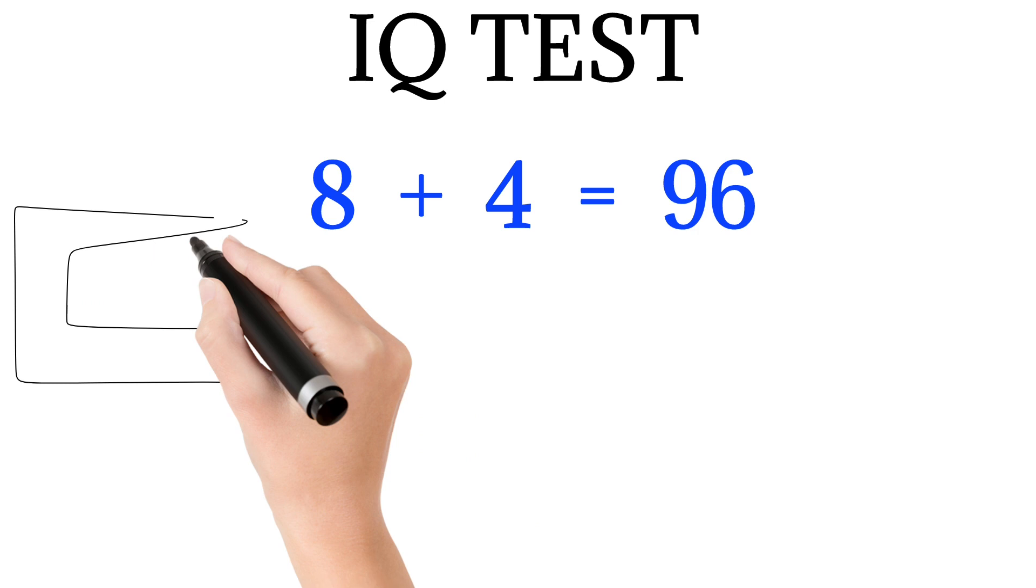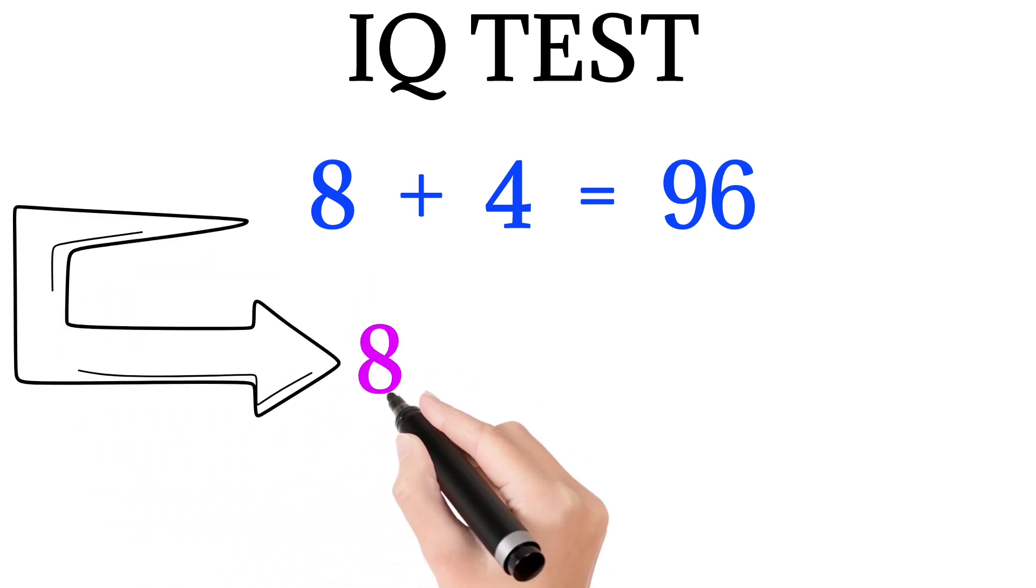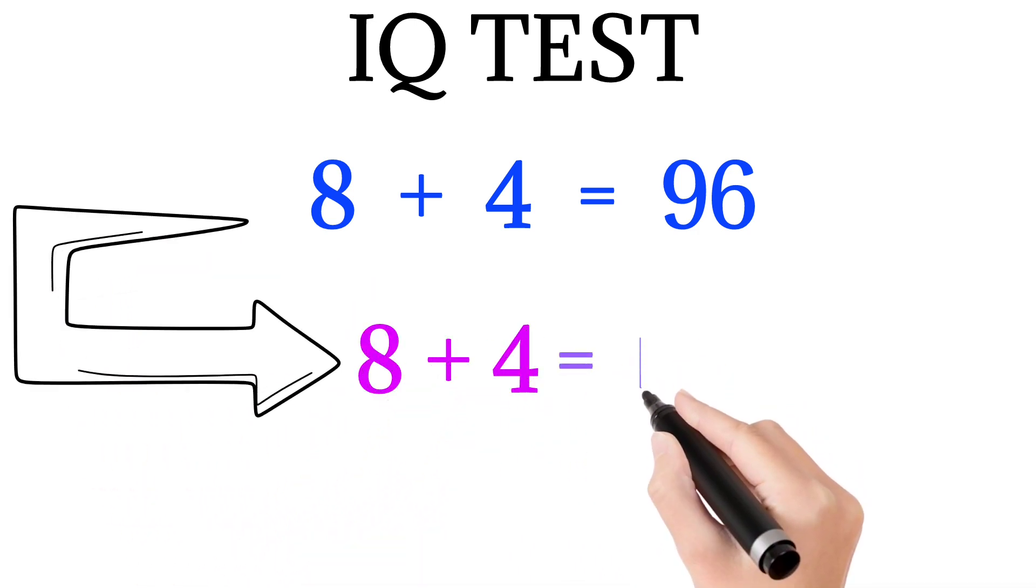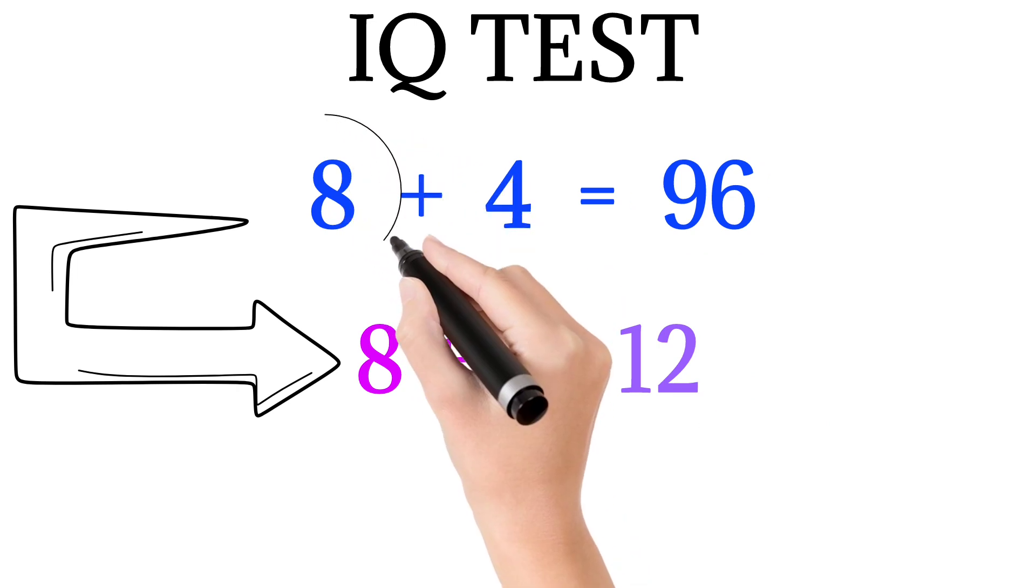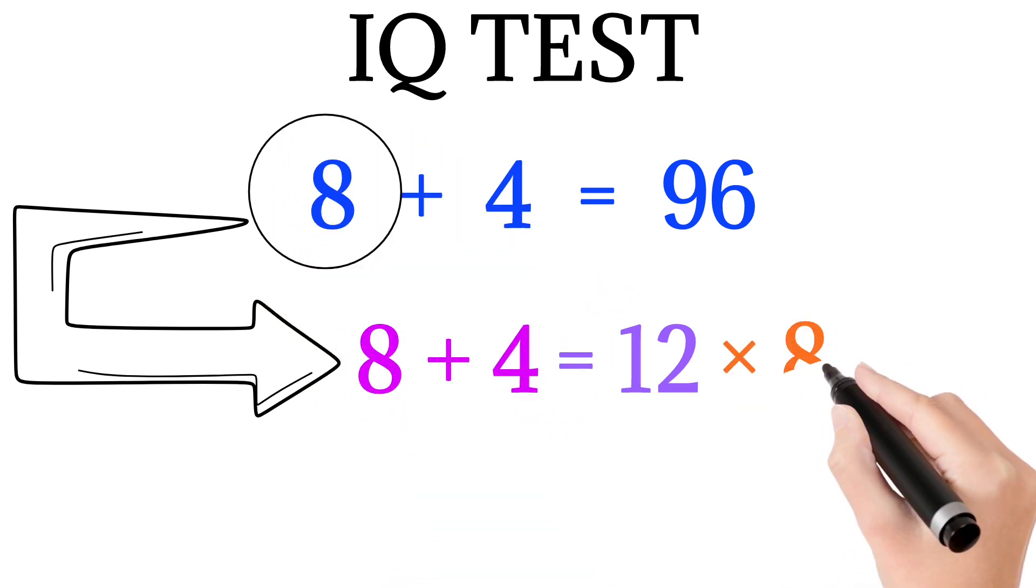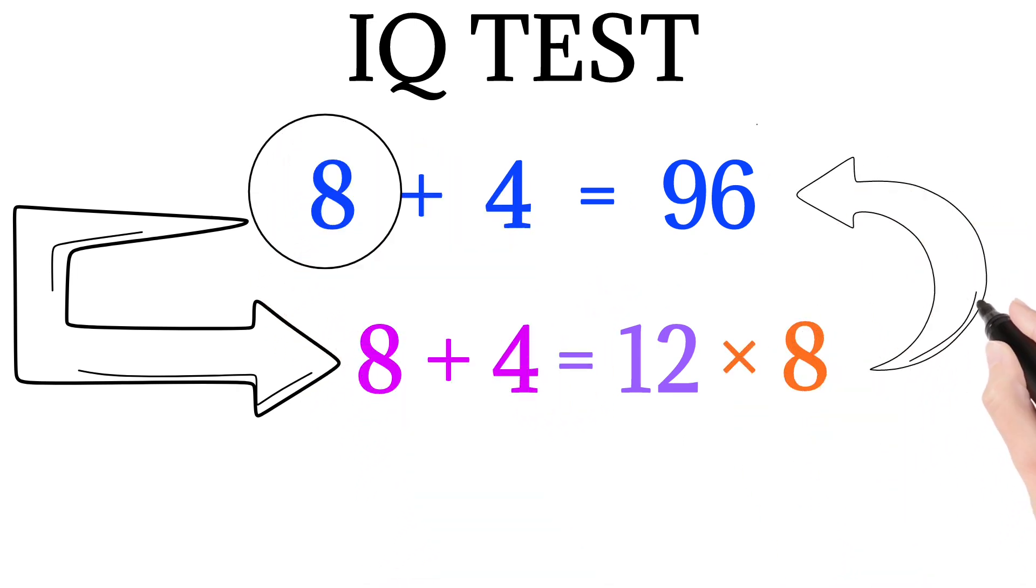Similarly, if we add both the numbers, that is 8 plus 4, we get 12. And now if we multiply it with the first number, that is 8, we get 96.